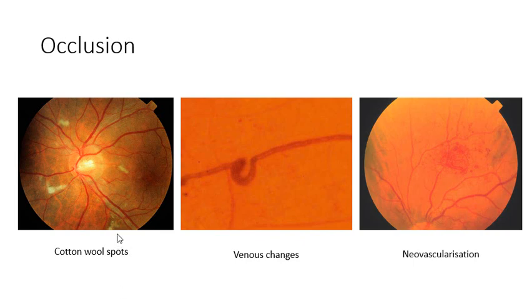Let's look firstly at cotton wool spots, shown on the left. If you pick up an old ophthalmology textbook, these used to be called soft exudates, but they're not anything like lipid exudates. They are fluffy, white lesions with indistinct margins — kind of cloudy and billowy. They occur at the margin of an ischemic retinal infarct and are caused by obstruction of axoplasmic flow and buildup of debris from axons in the nerve fiber layer of the retina.